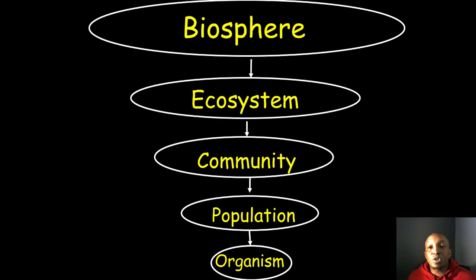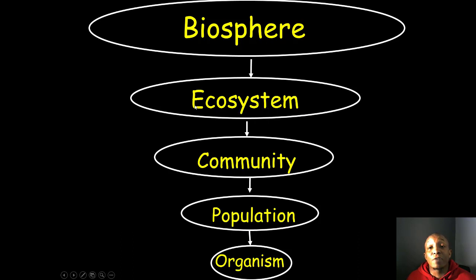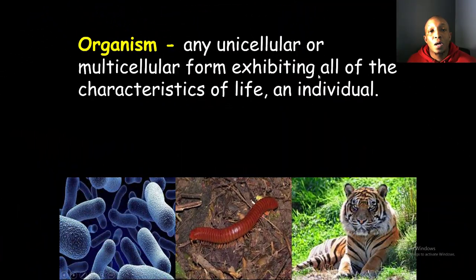Now let's look at our levels of organization, starting from the smallest: the organism. A group of organisms forms a population. A group of populations living together forms a community. A group of communities living together with the living and non-living factors in their environment forms an ecosystem. And if we combine all ecosystems together, we have the biosphere — our whole planet Earth.